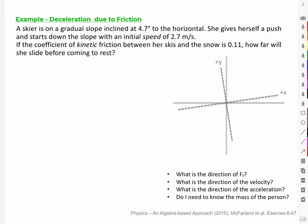A skier is on a gradual slope inclined at 4.7 degrees to the horizontal. She gives herself a push and starts down the slope with an initial speed of 2.7 meters per second. If the coefficient of kinetic friction between her skis and the snow is 0.11, how far will she slide before coming to rest?